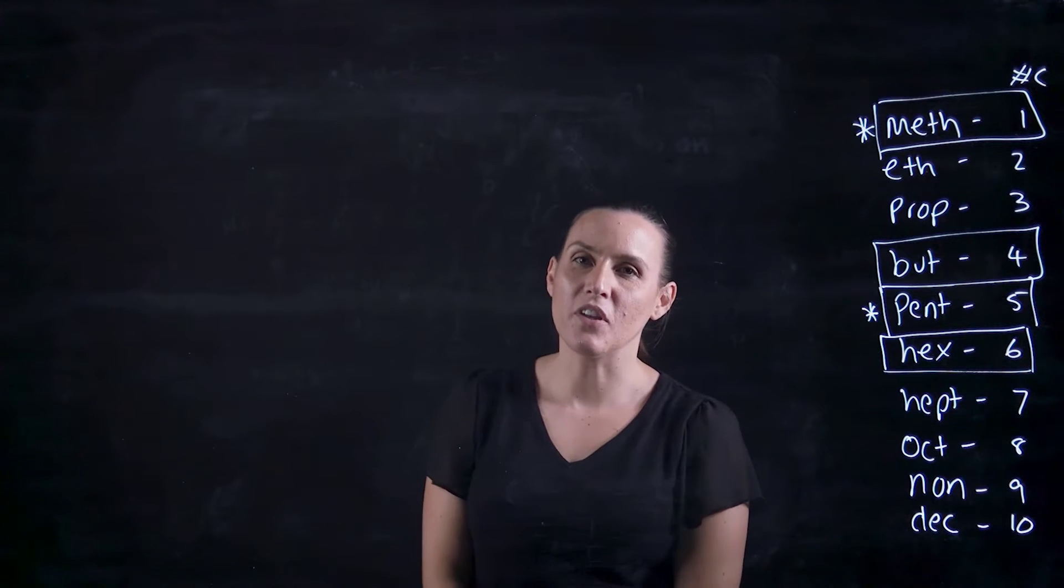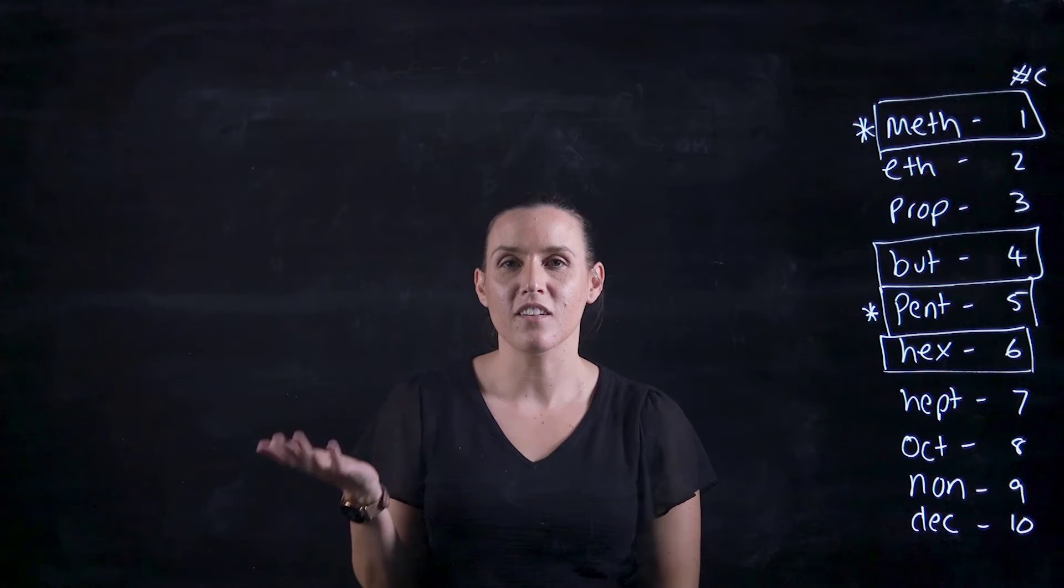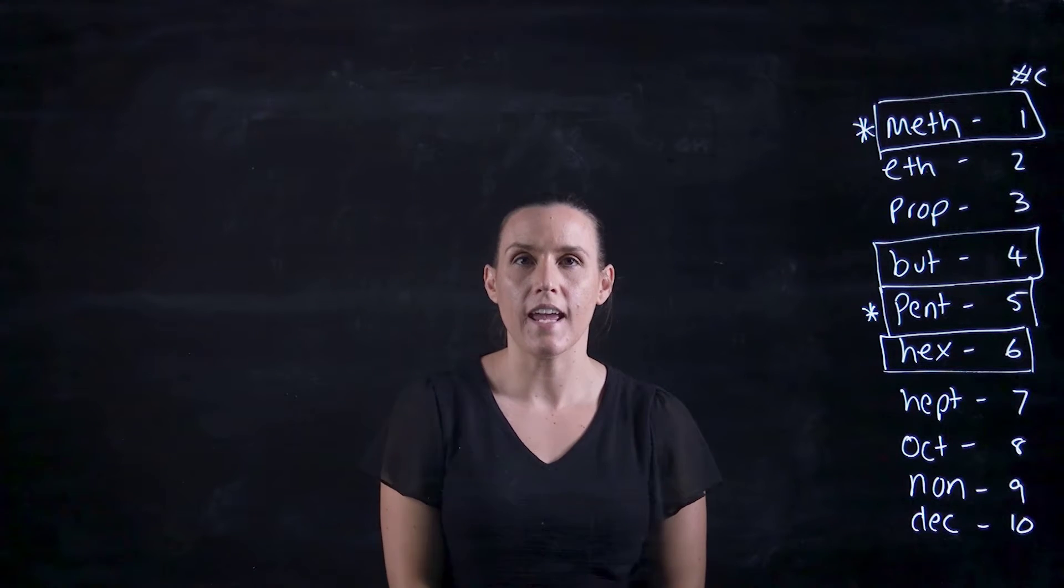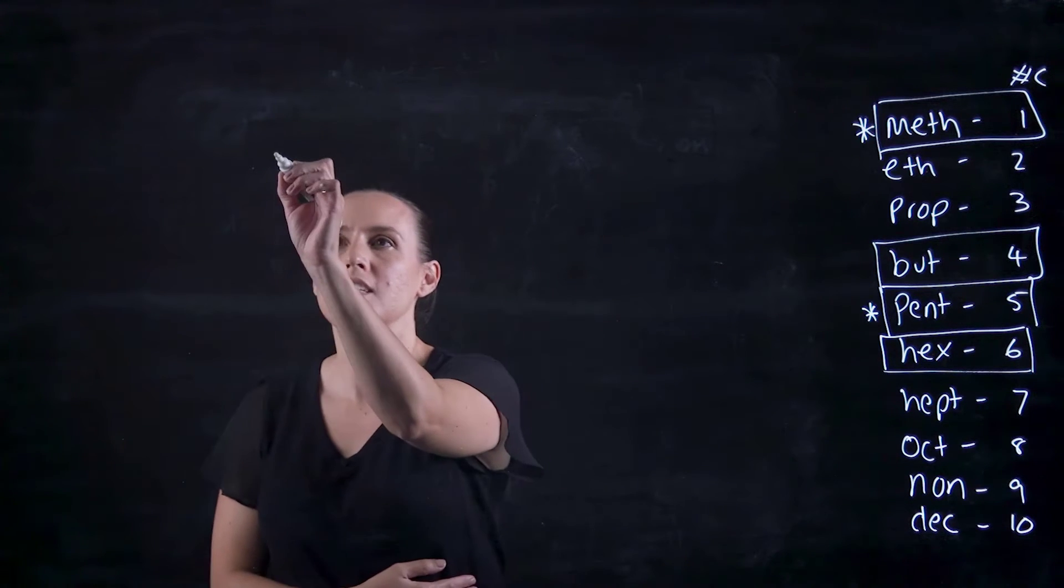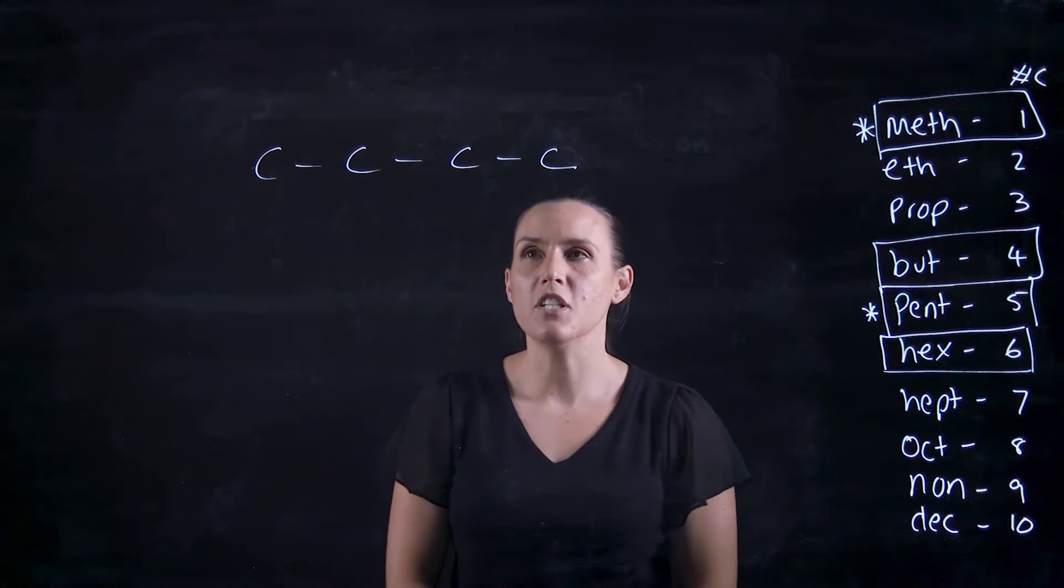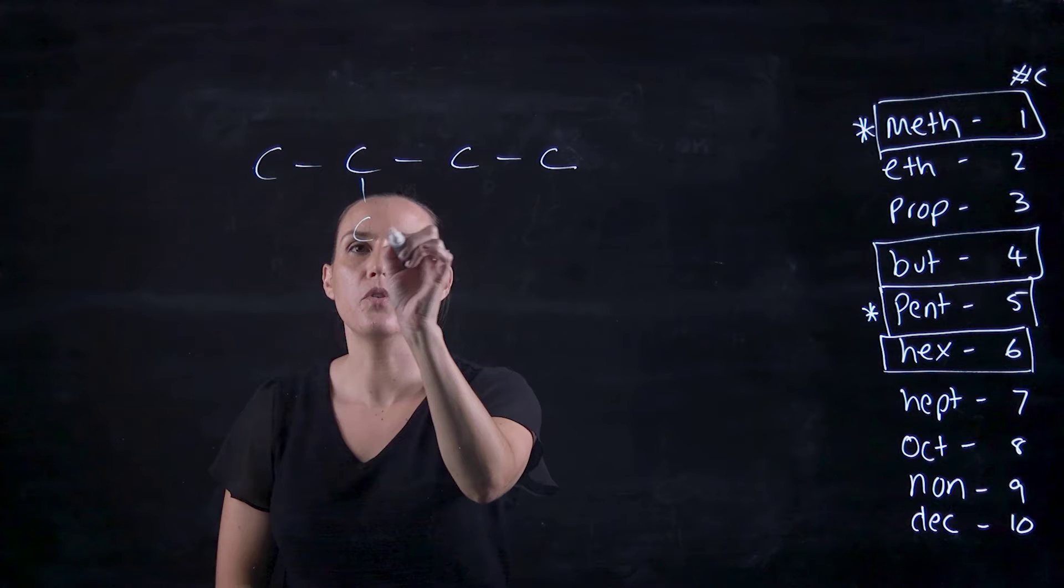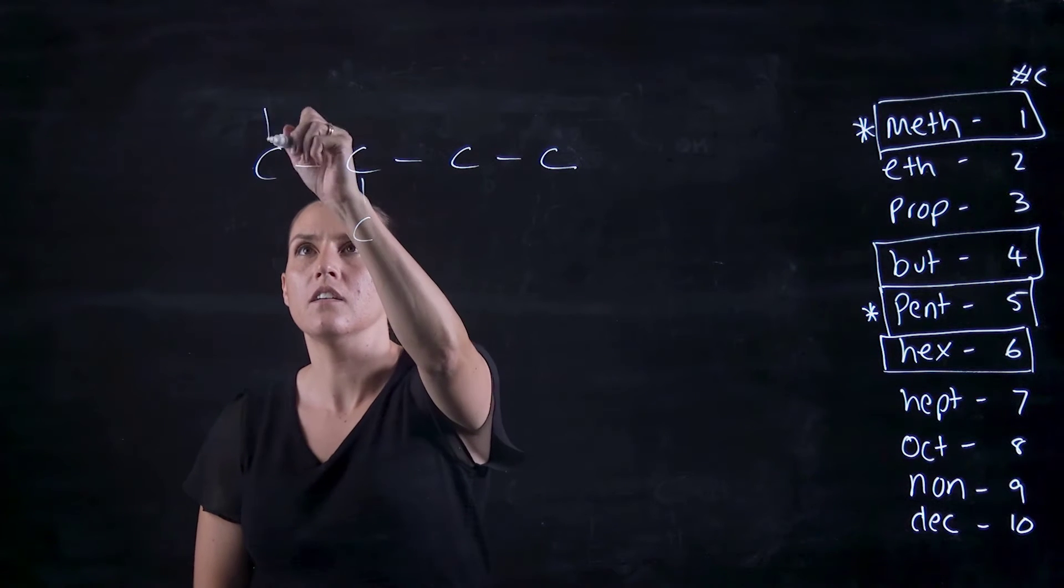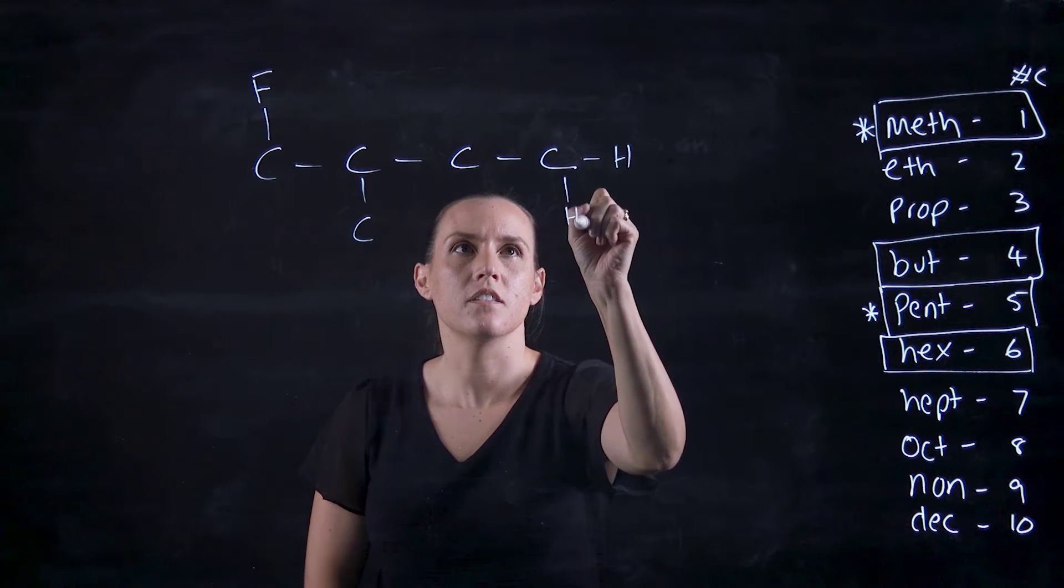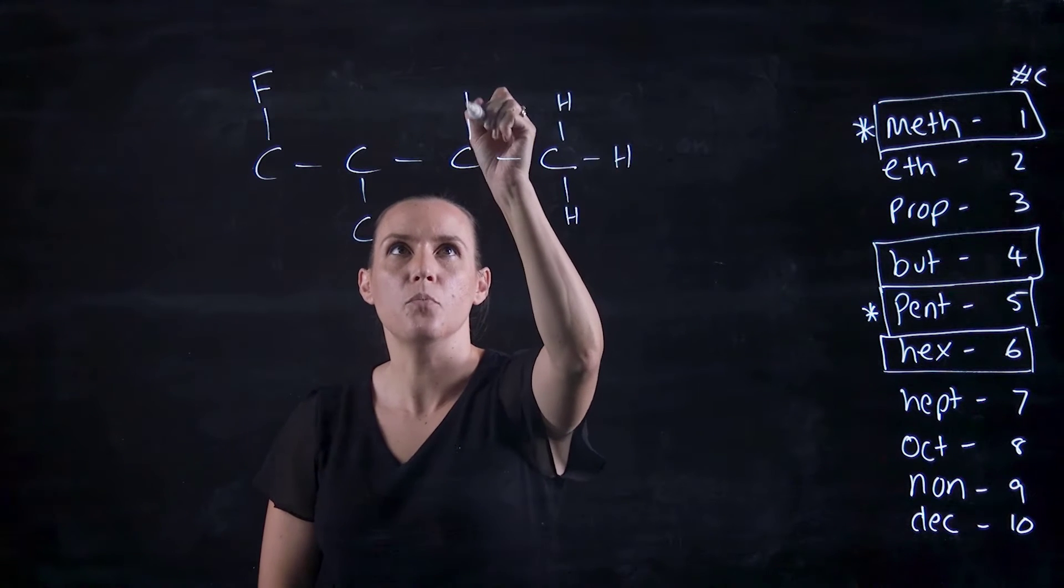Hi, so in this video today I want to go from the organic compound in the full structural diagram and go to the name. So let's start off with a four carbon chain and I'm going to put a couple of groups on here and add in my hydrogens so that each carbon has four bonds.